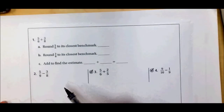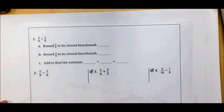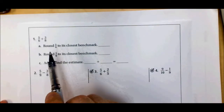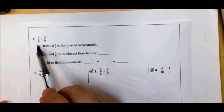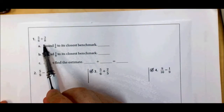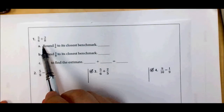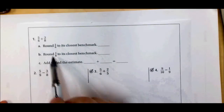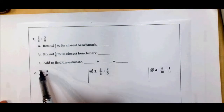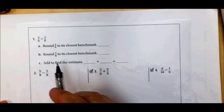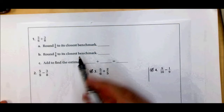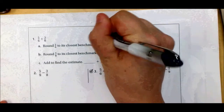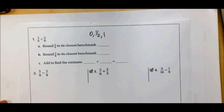I'm going to talk about how to estimate the sums and differences of fractions. Let's take five-sixths plus three-eighths. What I would do is round five-sixths, round three-eighths, and then add them together. We talked in class about benchmarks — our benchmarks are zero, one-half, and one.